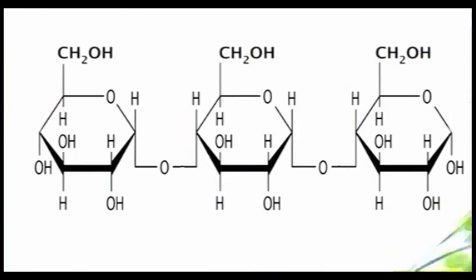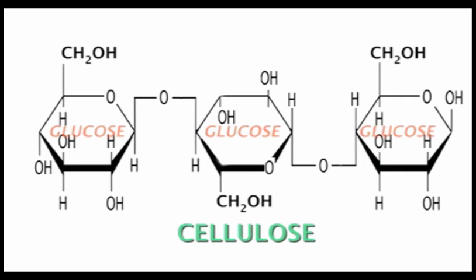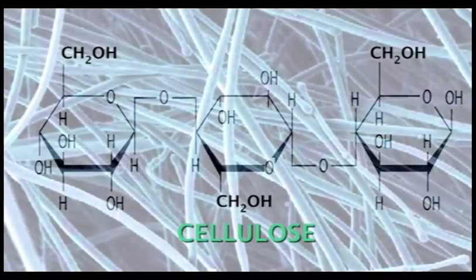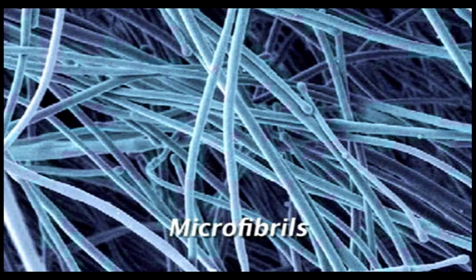Starch is a key source of the glucose used in cellular respiration in plants. However, it is interesting to note that a slight change in the way the glucose units are bound together results in the creation of cellulose. And the glucose in cellulose molecules is not available for cellular respiration. So, cellulose takes on a structural role instead, forming long microfibril threads that are the main components of the cell walls of plants.